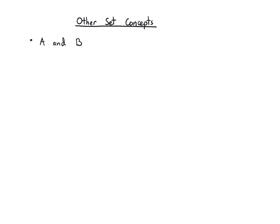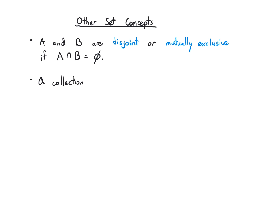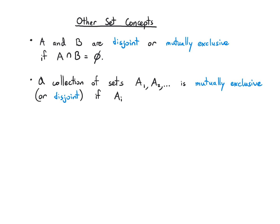A couple more set concepts to close off. Sets A and B are disjoint or mutually exclusive if their intersection is empty — they don't share elements in common. A collection of sets is mutually exclusive if there is no pair that has elements in common — if I check all different pairs and intersect them, I just keep getting the null set.